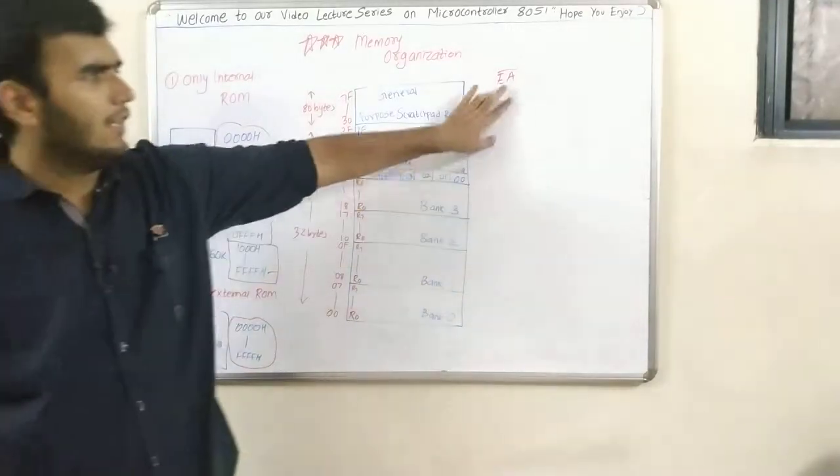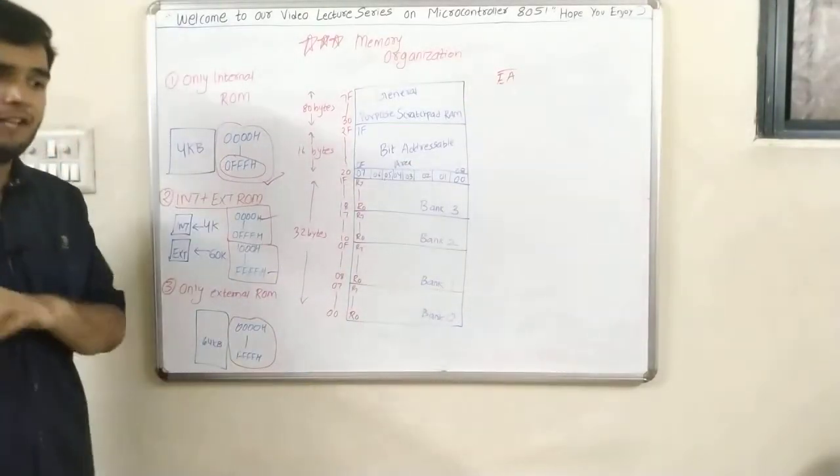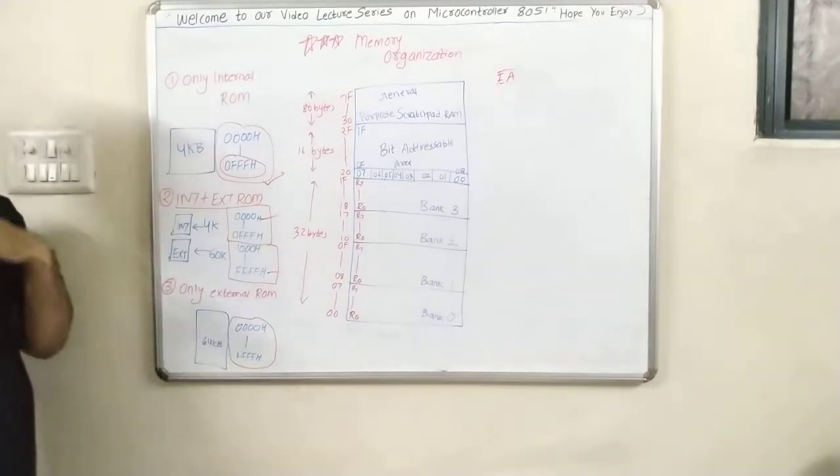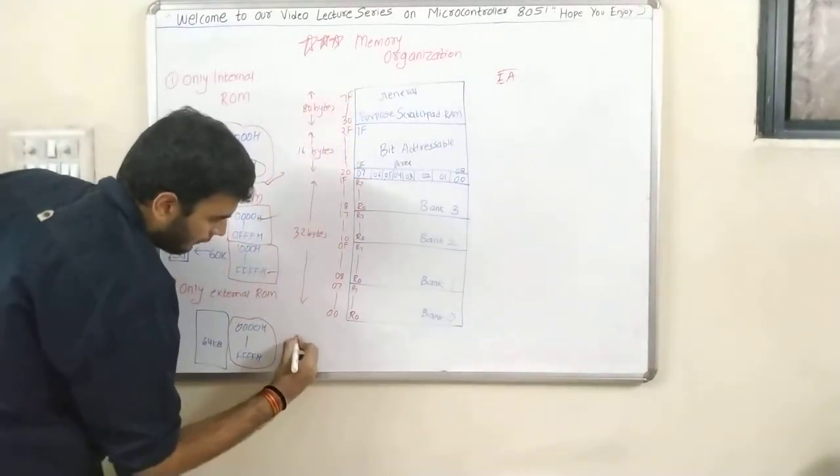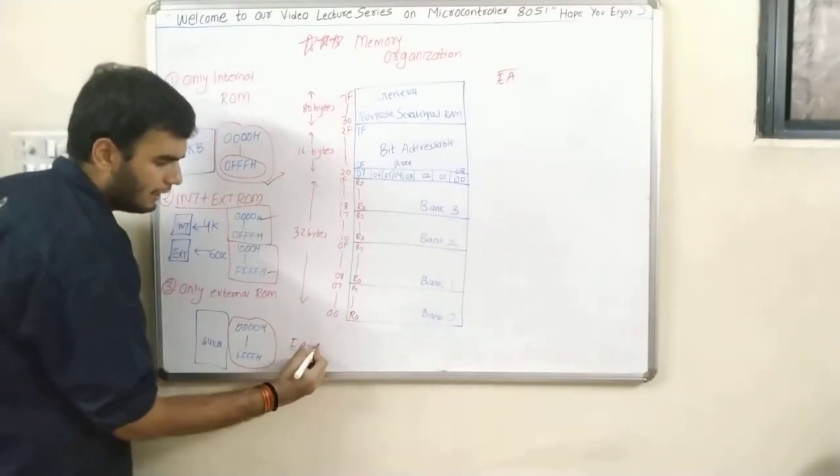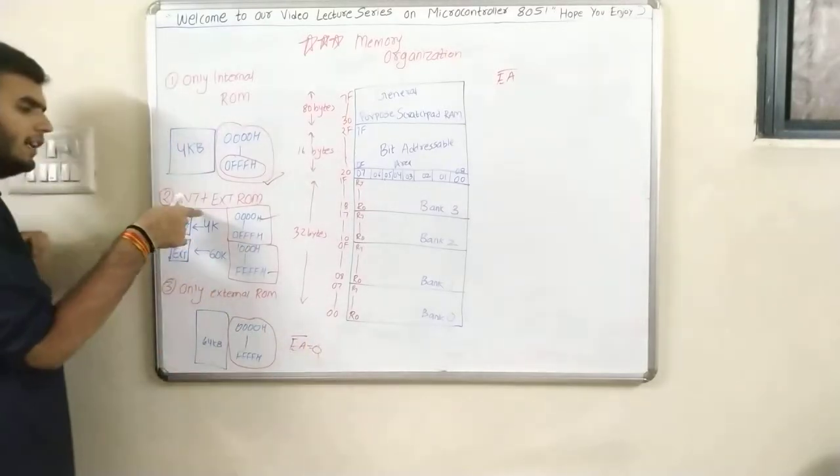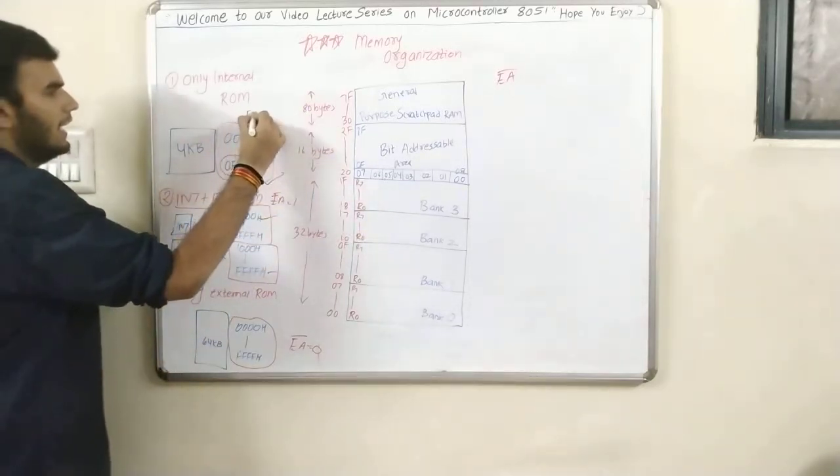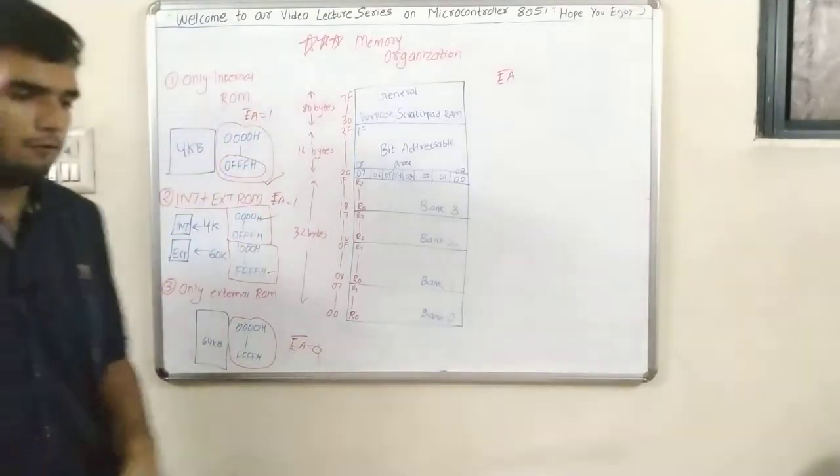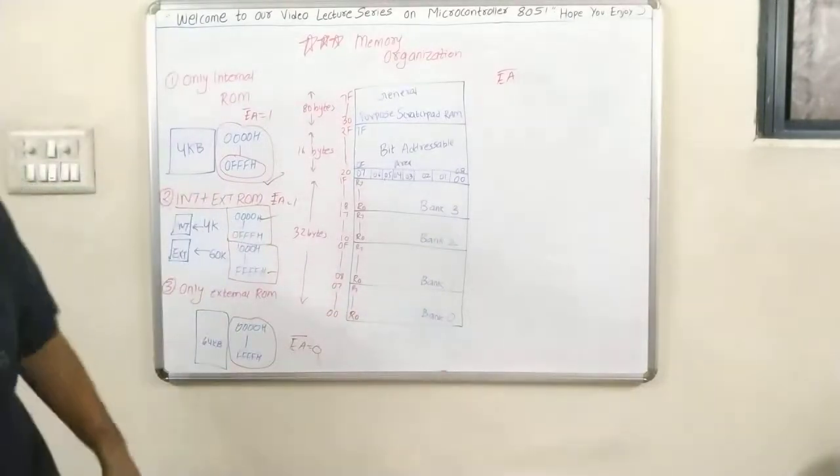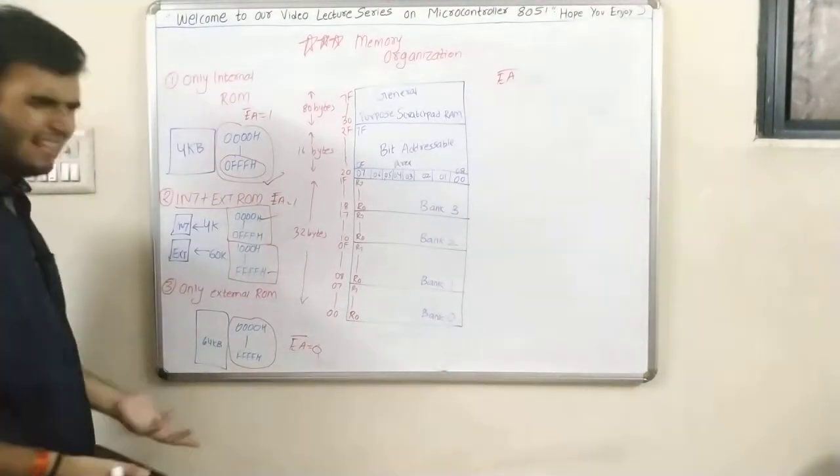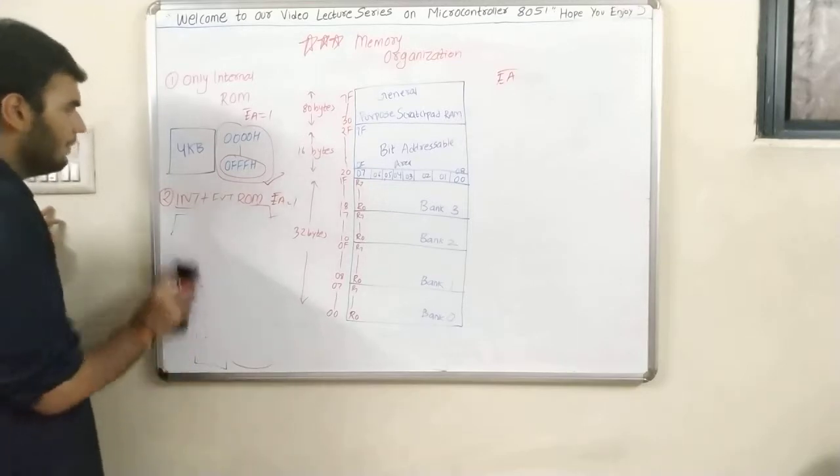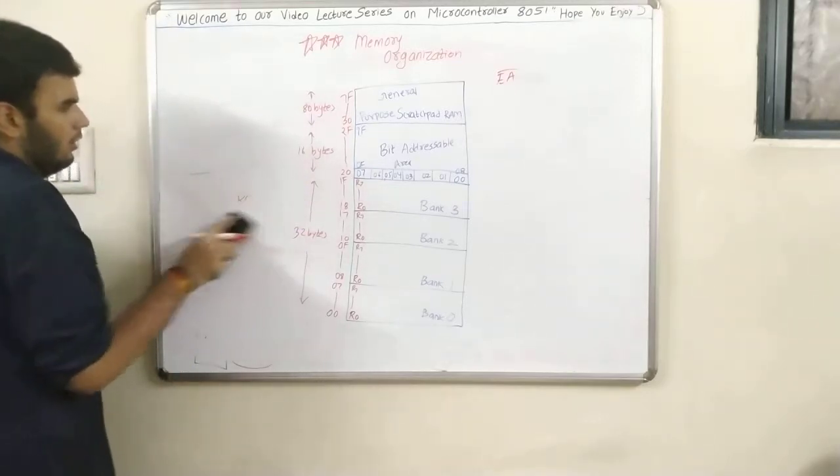Only external ROM means definitely 64KB. Now we will electrically discard the internal ROM by not connecting the pins. The range is from 00 to FFFF directly. What is EA̅? EA̅ is external enable access. Where we are giving the complete external enable access is in the last slide, because here internal ROM is discarded. Since it is active low, here it will be 0. Here we are using internal RAM also, so EA̅ will be 1 because complete external access is not given.